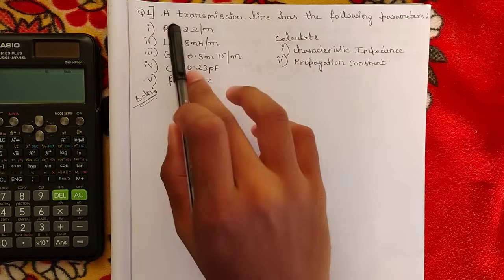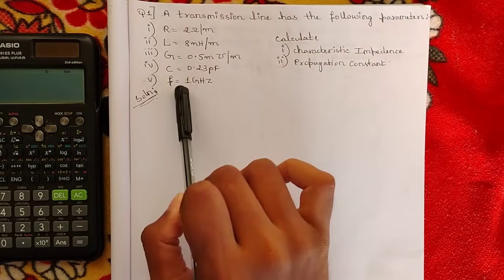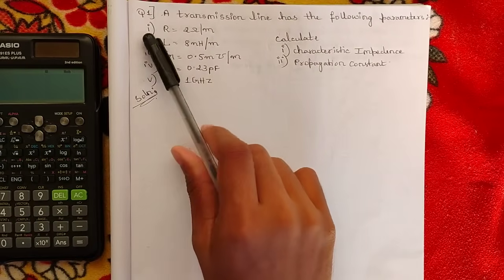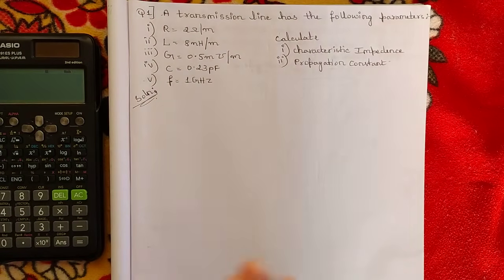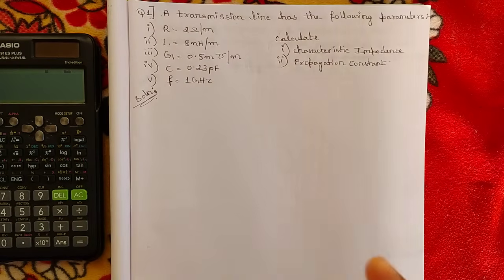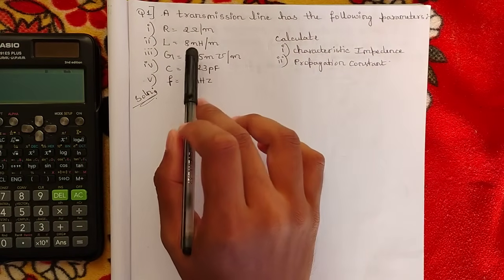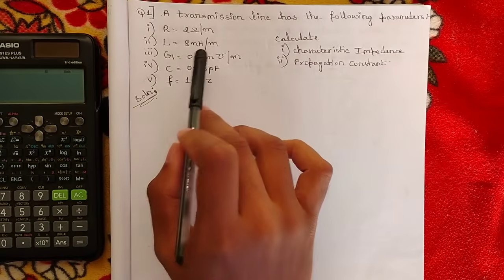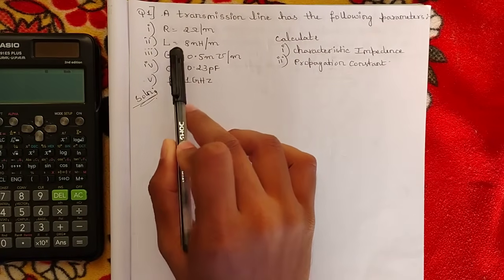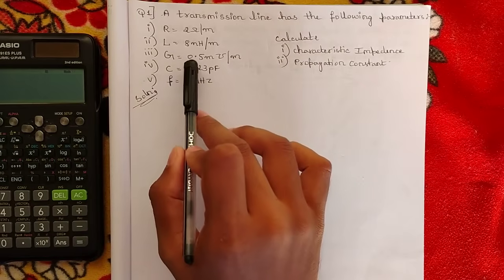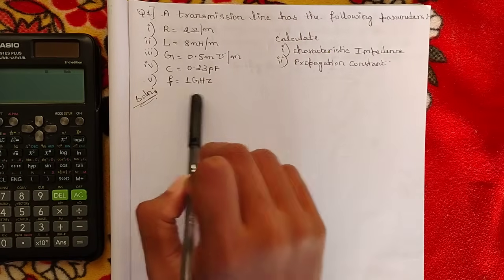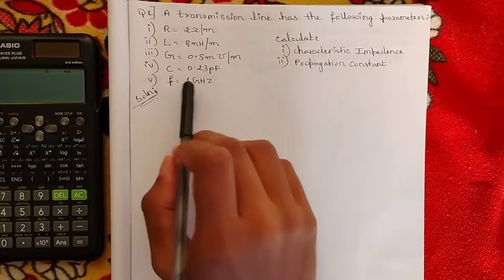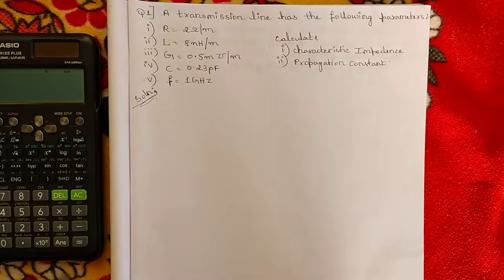The first problem: a transmission line has the following parameters. R (resistance) = 2 ohms per meter; L (inductance) = 8 nanohenry per meter; G (susceptance) = 0.5 millimho per meter; C (capacitance) = 0.23 picofarad per meter; and the frequency is 1 gigahertz.